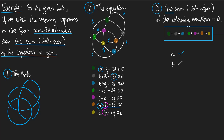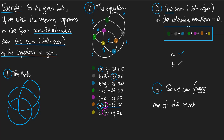What's the point of this result? It means that we can forget one of the colouring equations. In other words, if we want to check whether we've made a colouring, we only need to check all but one of the equations — the last one will hold automatically because it's the sum of the previous ones. This is an important point.